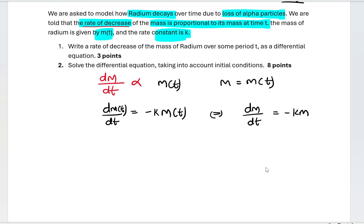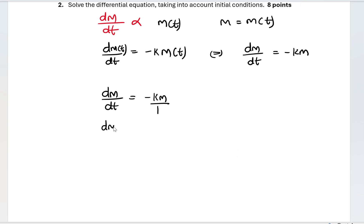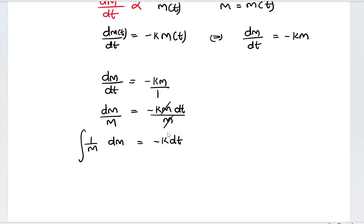We have dm/dt is equal to negative km. I'm going to cross multiply, so dm is equal to negative km dt. Now you can see it clearly that we can divide both sides by m. Now I've got 1/m dm is equal to negative k dt. So now I can integrate both sides.